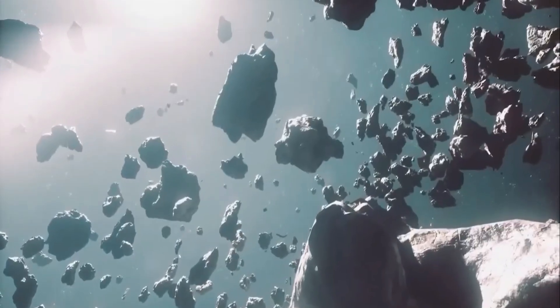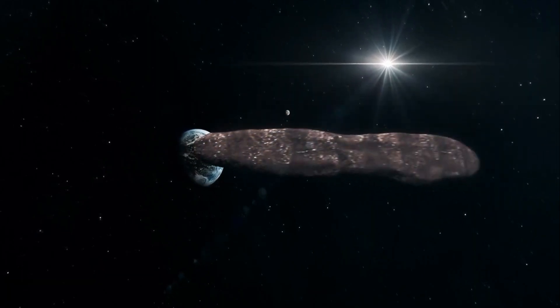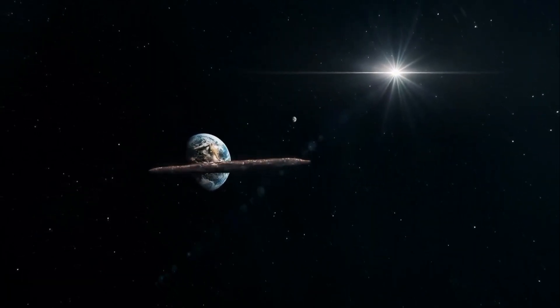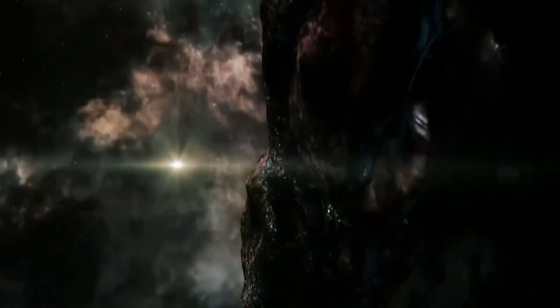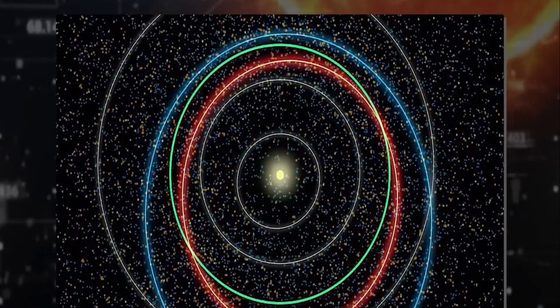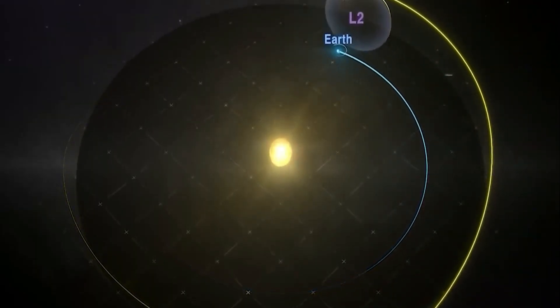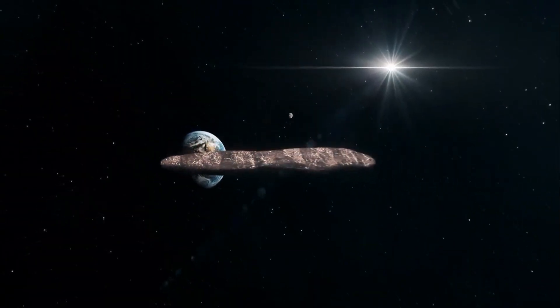Nonetheless, when contemplating a more advanced civilization, it becomes plausible that even a substantial object like Oumuamua, equipped with minimal radiation-absorbing plates, could harness power from solar radiation. This advanced civilization hypothesis could also explain the object's elusive nature, with suggestions of a potential cloaking mechanism.